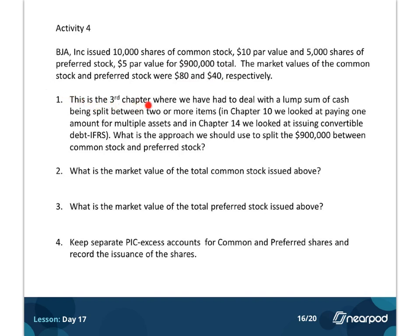So number one says, this, rightly so, is the third chapter where we've had to deal with a lump sum of cash being split between two or more items. So in Chapter 10, we looked at paying one amount for multiple assets. In Chapter 14, we looked at issuing convertible debt under IFRS. And we talked about the fact that if we got a lump sum, we'd have to split it.